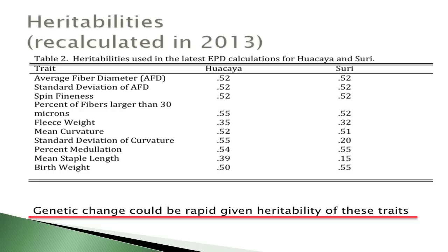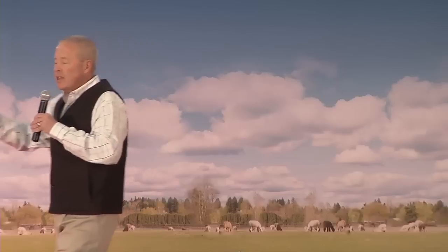In the beef industry, only about two things are 50% heritable: mature weight and some carcass characteristics. In the dairy industry over the last 30–40 years, we've tripled milk production from Holstein cattle through selection — and the heritability of milk production in Holsteins is about 35%. With alpaca traits being far more heritable, if your breeding program isn't where you want it for a particular trait, there's a lot of opportunity to make good genetic improvement and get it where you want it.